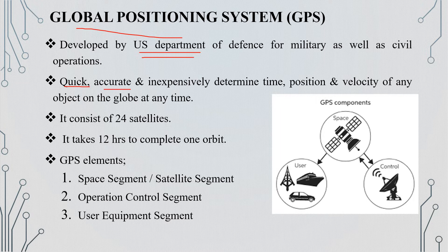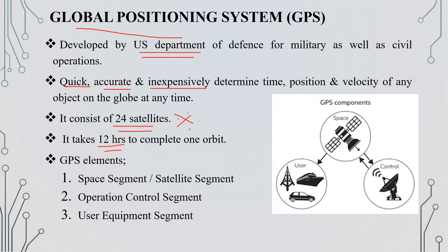GPS provides accurate time and position and velocity information. It is free to use. The GPS system has 24 satellites with a 12-hour orbit. The three segments are: the space segment (satellite segment), the operational control segment, and the user segment.